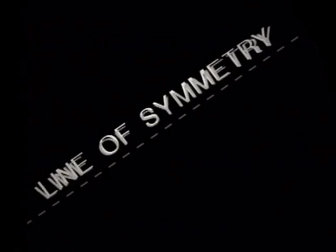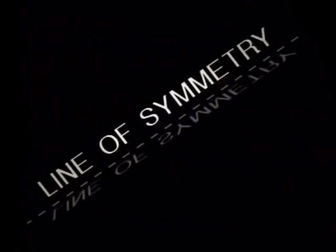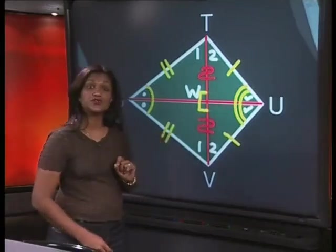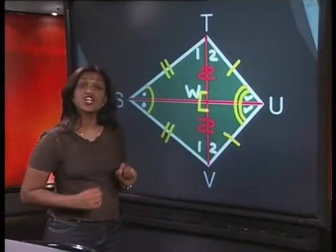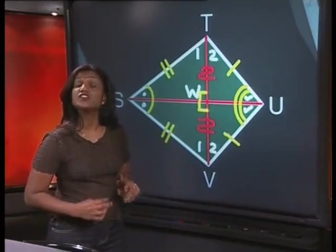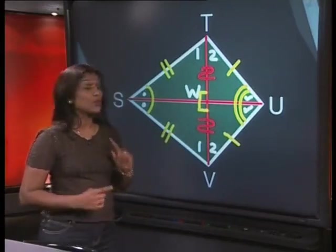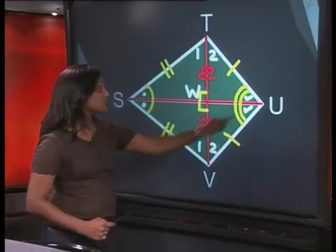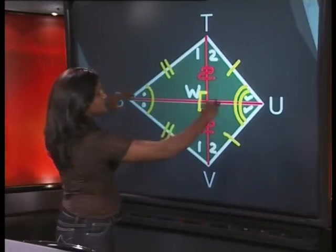Lastly, let us investigate the lines of symmetry in the convex kite. Is the diagonal SWU a line of symmetry? Well, this should not be a surprise at all. We need not even do the folding. We reflected triangle STU onto triangle SVU over the line SU.